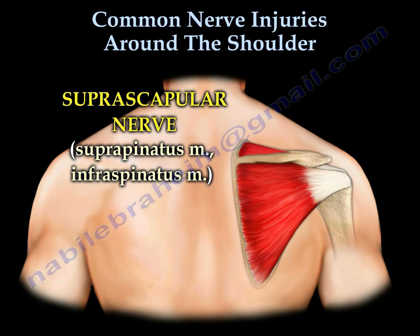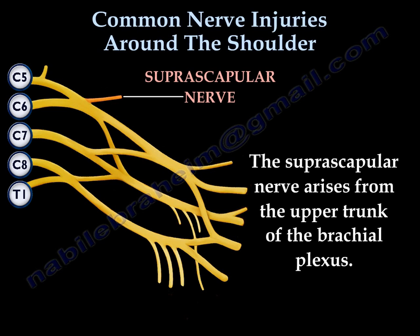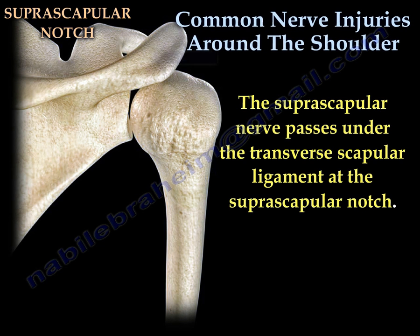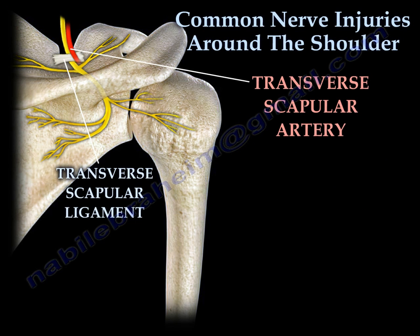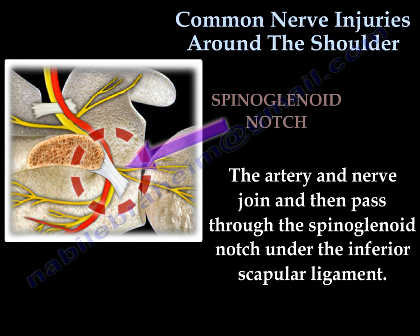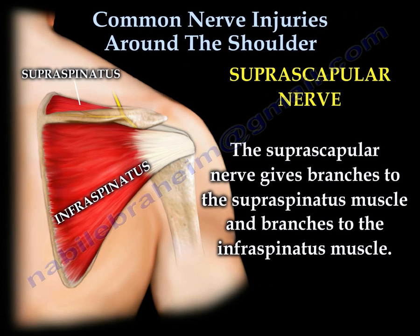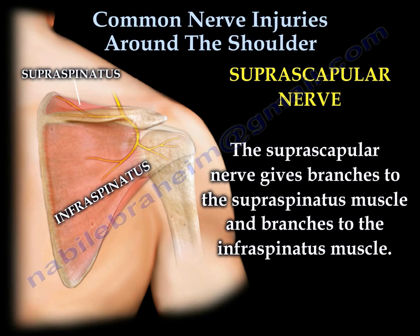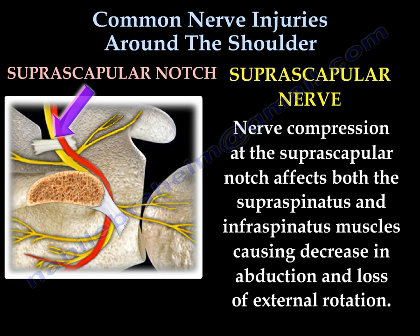Suprascapular nerve — it supplies the supraspinatus and infraspinatus muscles. The suprascapular nerve arises from the upper trunk of the brachial plexus and passes under the transverse scapular ligament at the suprascapular notch. The transverse scapular artery runs above the ligament. The artery and nerve then pass through the spinoglenoid notch under the inferior scapular ligament. The suprascapular nerve gives branches to both the supraspinatus and infraspinatus muscles.